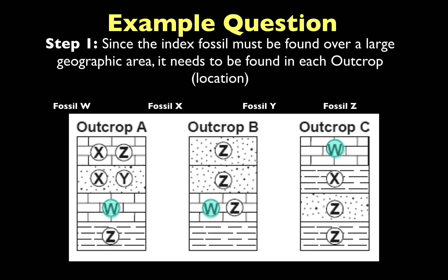Let's go fossil by fossil. Fossil W is found in outcrop A, there's one in outcrop B, and there's also a W in outcrop C — so it's found in each location and can be considered widespread. Fossil X is found in outcrop A and outcrop C, but there's no fossil X in location B, so it cannot be an index fossil. Fossil Y is only found in outcrop A, so it also cannot be an index fossil. Fossil Z is found in outcrop A, outcrop B, and outcrop C — so fossil Z also meets that first criteria.